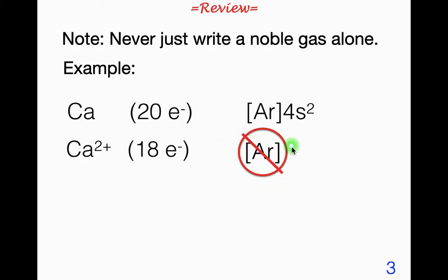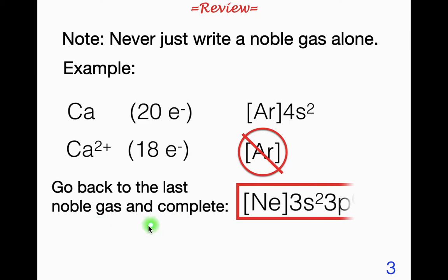If we just write the symbol for a noble gas and just walk away, it doesn't give us information that we need. We always want an electron configuration to clue us into what are the last electrons. So what we need to do is go back to the last noble gas and complete from there. And so this would be neon 3s2 3p6.